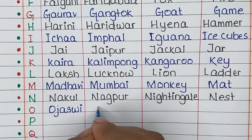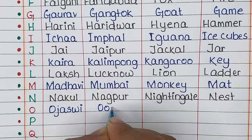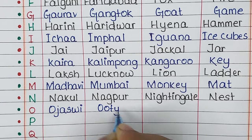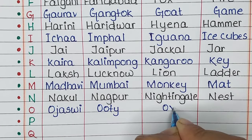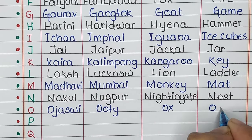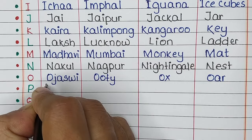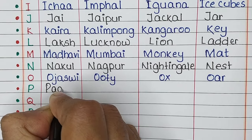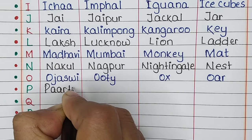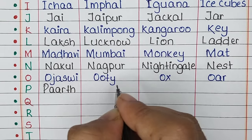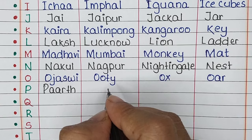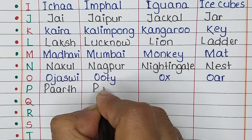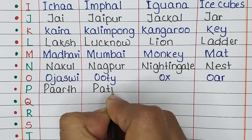Next is letter O. The name is Ojashvi, the place is Ooty, the animal is Ox, and the thing is Oil.